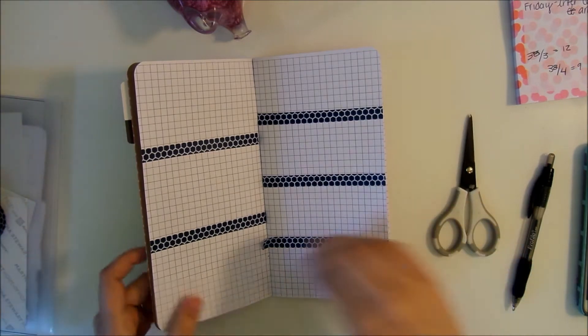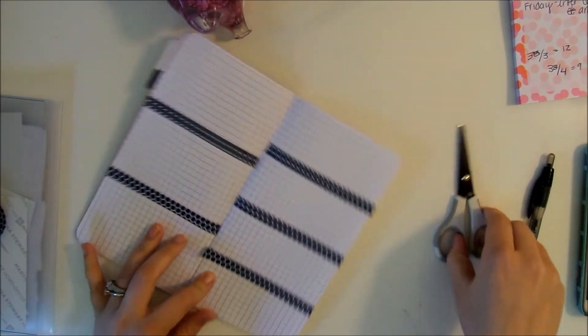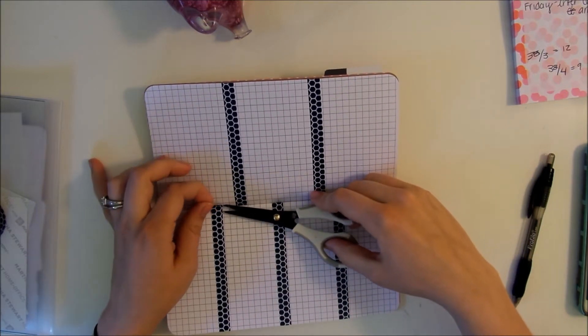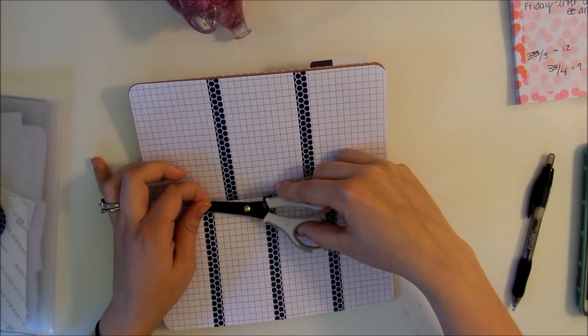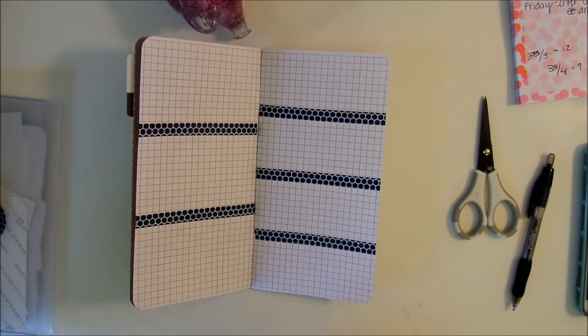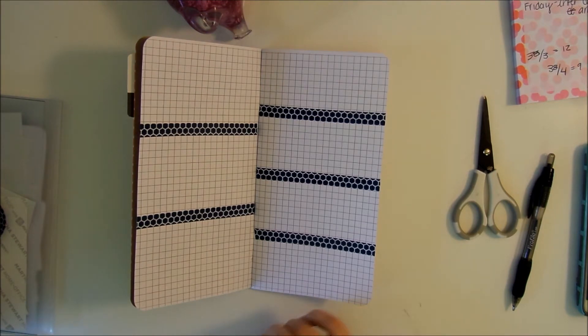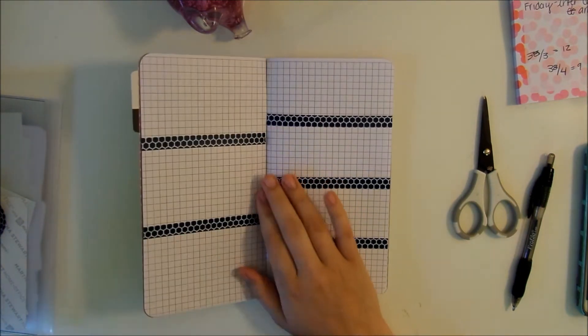Right now I will have everything in one spot except for my fitness planner, which is an Inkwell Press fitness planner, and my Inkwell Press notebook which is for my school. I just started classes today, so kind of nervous but I gotta start sometime I guess, right?